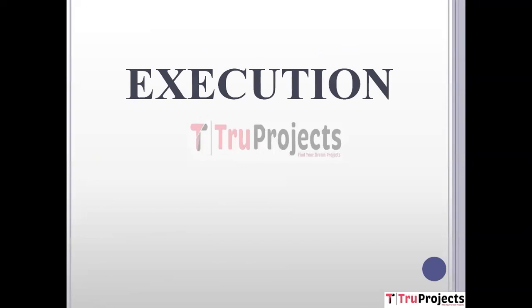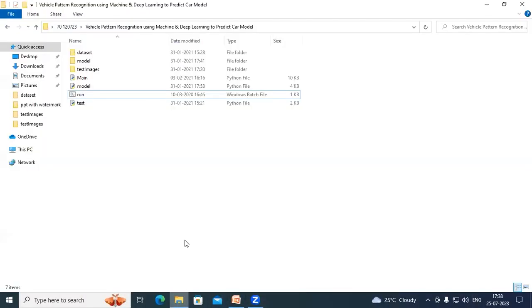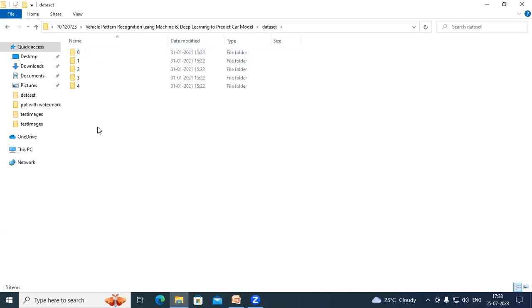Execution of the project. To execute this project, first we have to open the code folder. This is the dataset folder in which I have the required dataset. If you open the dataset folder, we can see we are using images from five different car models and each folder contains different images of these five different car models.